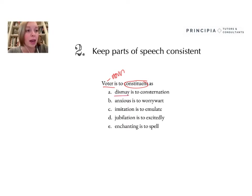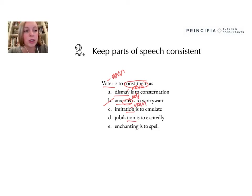A — dismay, I know is a noun. B — anxious, I know is an adjective, particularly from this -OUS ending, so I can eliminate that option. C — imitation: this -TION ending tells me that that is a noun. D — jubilation: same ending tells me that that is a noun. And then E — enchanting, I know is an adjective, so I'm going to eliminate that option.